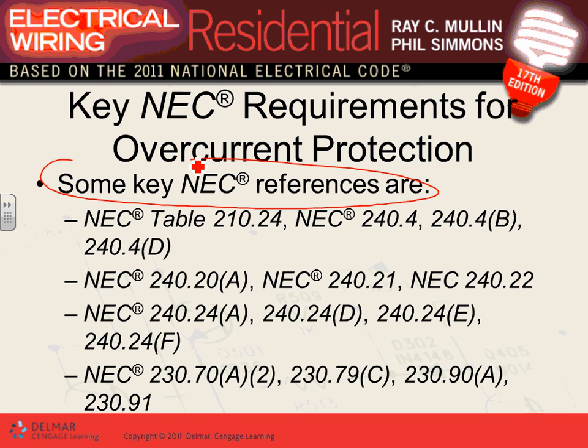You can't put an overcurrent protection device in a bathroom. You cannot put a panel over steps — over a landing, yes, but not over steps. That's another rule. For a single-family dwelling, the minimum overcurrent protection device is 100 amps — that's also a code requirement.